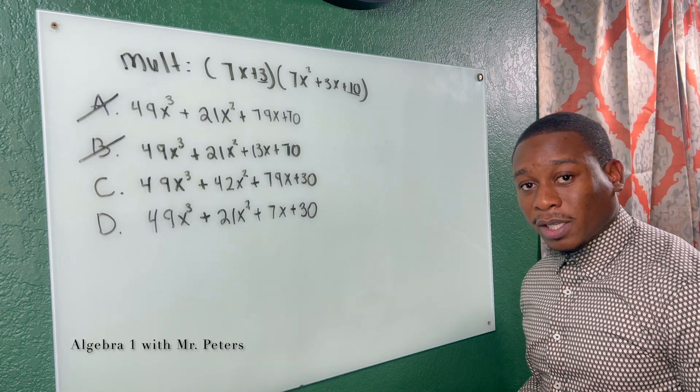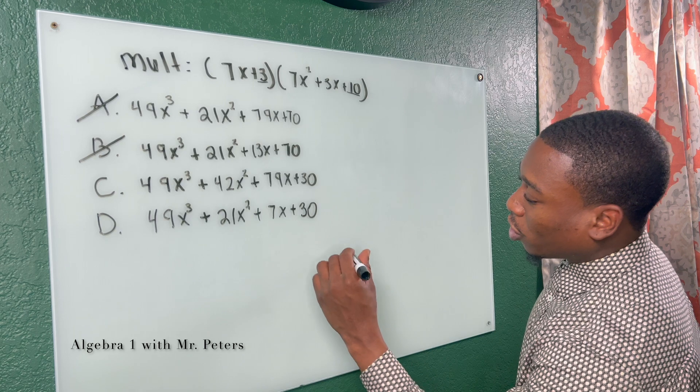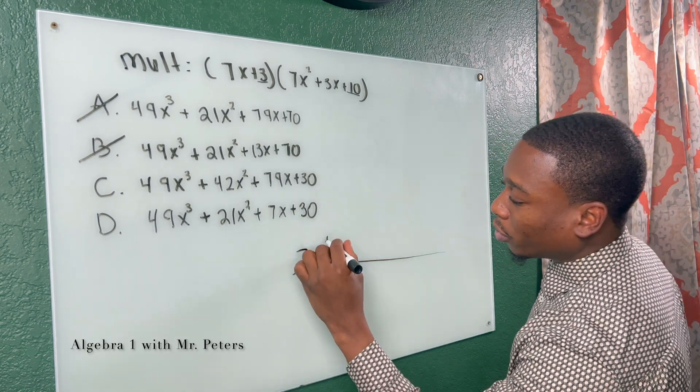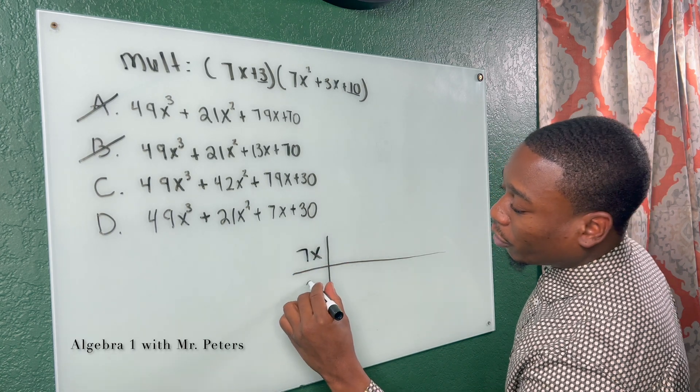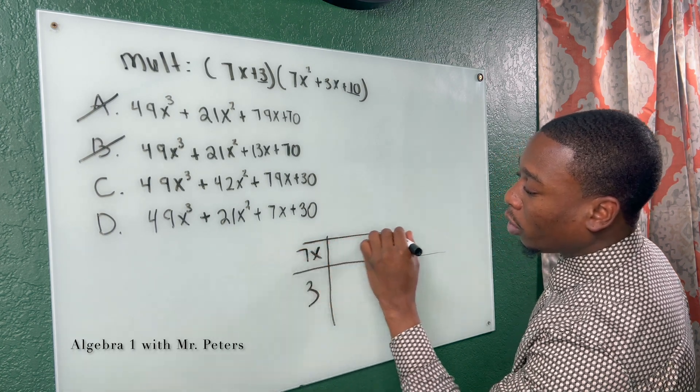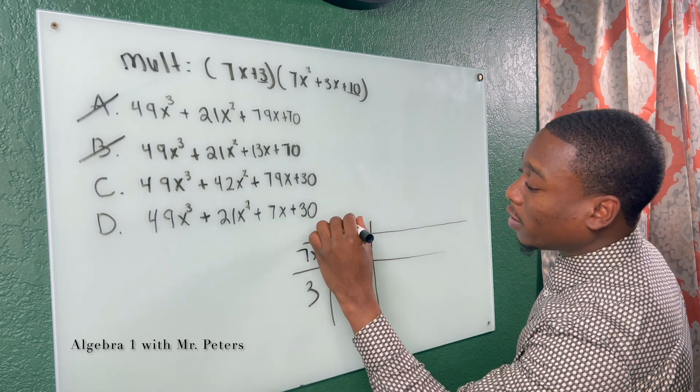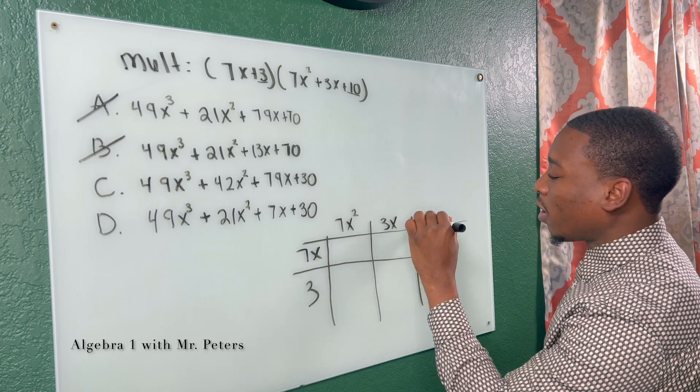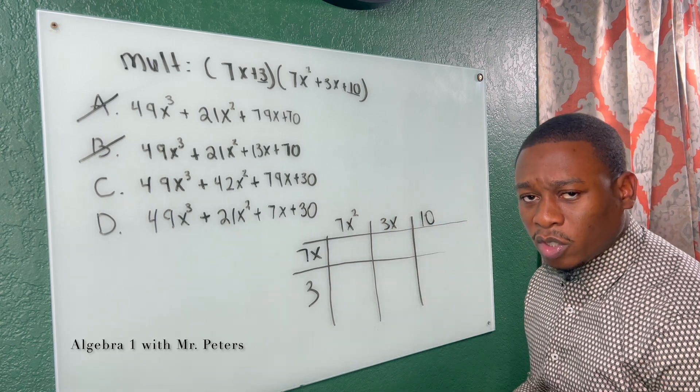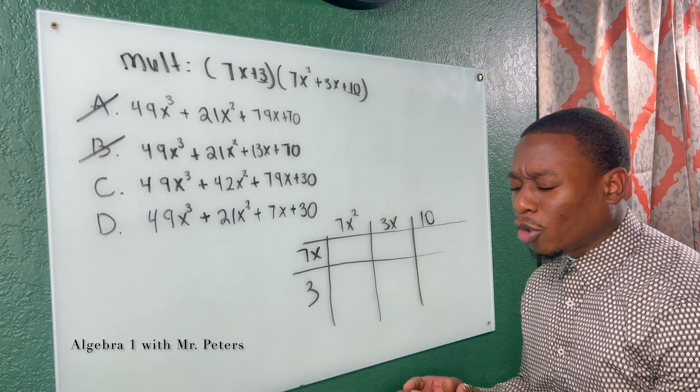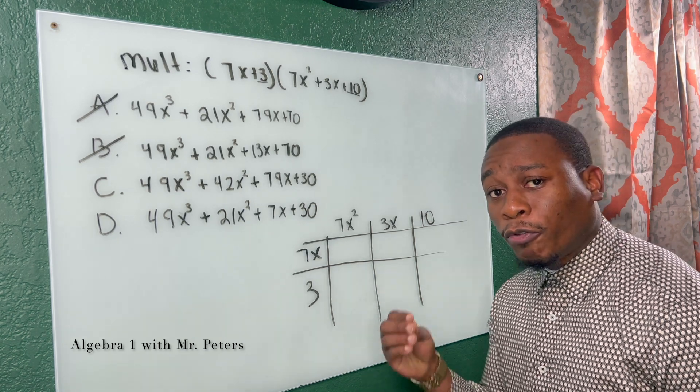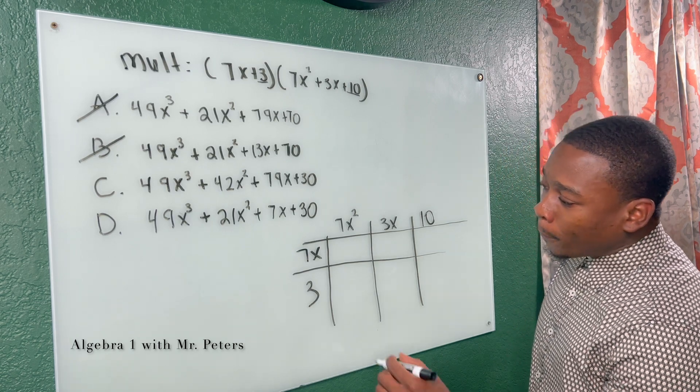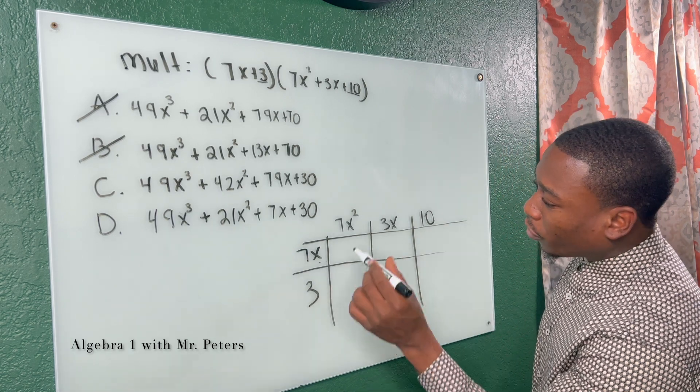Now, with this being said, we're going to do the box method. So the box method, I just love this method because I just think it's the greatest thing in the world. So we have 7x and 3, and we're going to multiply that by 7x², 3x, and then 10. I didn't draw the borders of my box, but you guys understand what's going on. And this is great for my students who have an issue with foiling. This helped me to understand foiling even better. That's why I practice it.